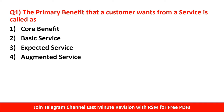The first question: The primary benefit that a consumer wants from a service is called — options are poor benefit, basic service, expected service, or augmented service. The answer is core benefit. Core benefit means the primary benefit that a customer or consumer needs from a service. For example, if we purchase a fan, the main core benefit is to blow air. If we purchase an air conditioner, the main primary benefit is to cool the room. This is the core benefit concept.